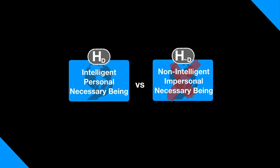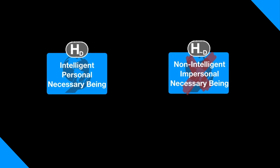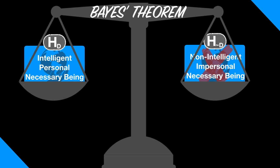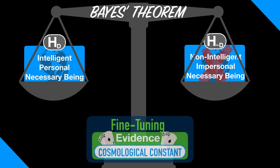To summarize, we had two competing hypotheses about the necessary being involved in the production of our universe. Hypothesis HD said that it is intelligent. Hypothesis H not D said it is non-intelligent. We then used Bayes' theorem to determine what level of confidence we should place in the designer hypothesis, given the fine-tuning of the cosmological constant for life.